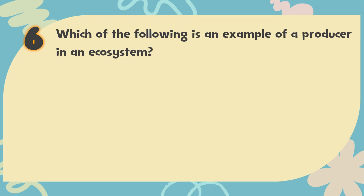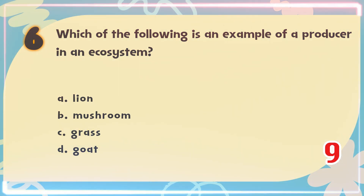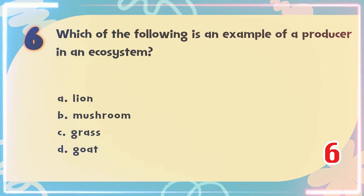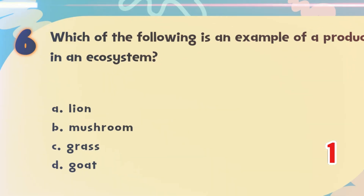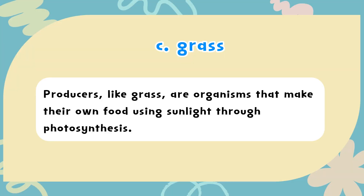Number 6. Which of the following is an example of a producer in an ecosystem? The choices are: A. Lion, B. Mushroom, C. Grass, D. Goat. The correct answer is C. Grass. Producers, like grass, are organisms that make their own food using sunlight through photosynthesis.